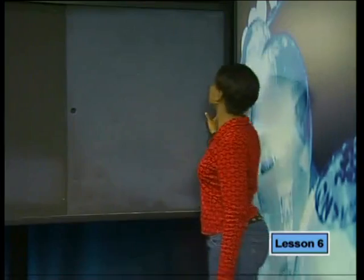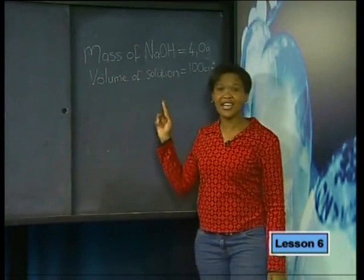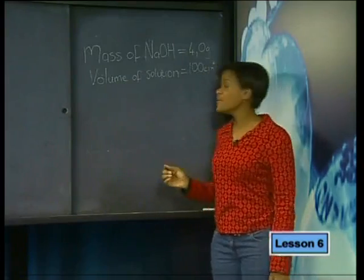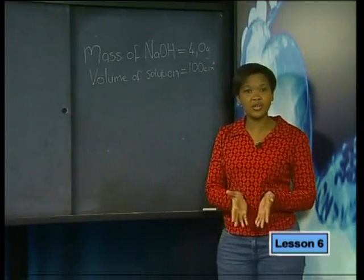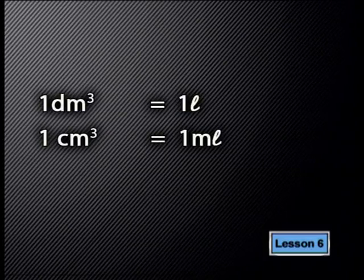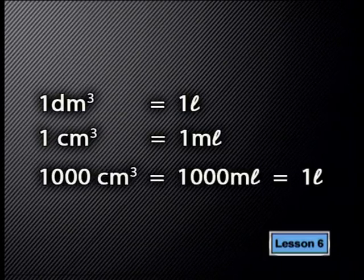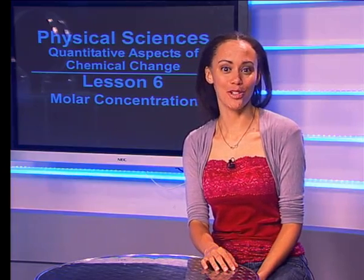Now let's look at the data we have about Aaron's solution and try to work out the concentration. We know that the mass of the sodium hydroxide is 4.0 grams. We also know that the volume of the solution is 100 centimetres cubed. Before we start working out the concentration, we have to consider the units of volume. The unit of volume used by chemists is decimetre cubed. One decimetre cubed is exactly the same volume as one litre. One centimetre cubed is equal to one millilitre, so 1,000 centimetres cubed equals 1,000 millilitres, which equals one litre.